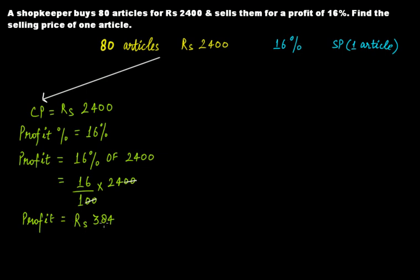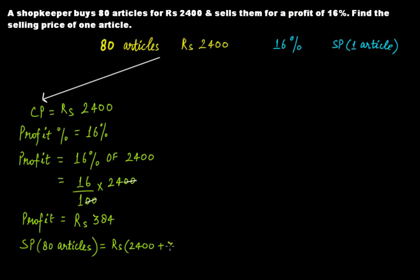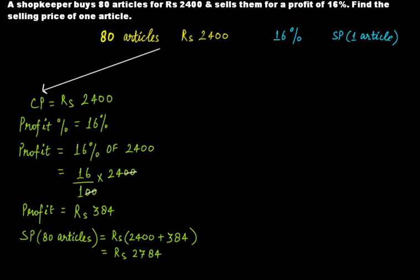The profit is rupees 384 when selling these 80 articles at a profit of 16 percent. So the selling price of these 80 articles will be the cost price plus the profit — that is 2400 plus 384 — giving a selling price of rupees 2784 for 80 articles.